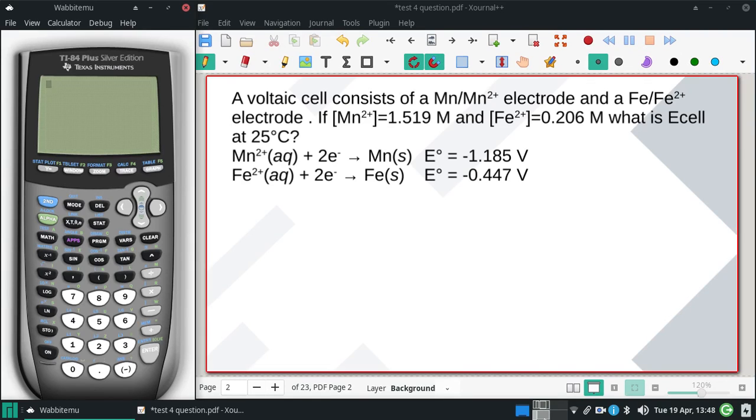A voltaic cell consists of a Mn/Mn²⁺ electrode and a Fe/Fe²⁺ electrode. If [Mn²⁺] = 1.519 M and [Fe²⁺] = 0.206 M, what is E_cell at 25°C?